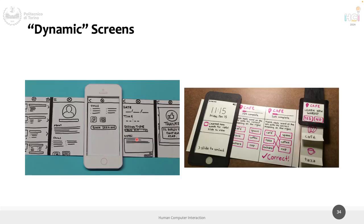For dynamic screens like scrolling, you put multiple pieces of paper together and pull or push them according to what you need to show. The person testing the prototype sees only the device container, and you pull a strip of paper to reveal the next section. This also works for vertical or horizontal scrolling — even for a smartwatch where you scroll vertically.